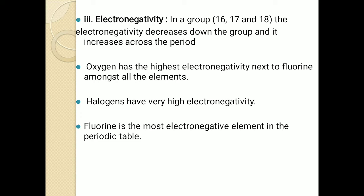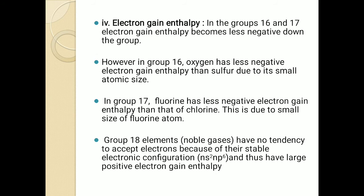The next property is electron gain enthalpy. Electron gain enthalpy is the energy released when an extra electron is added to the last shell. Because the energy is released, it has a negative value — unlike ionization enthalpy where energy is provided and the value is positive.